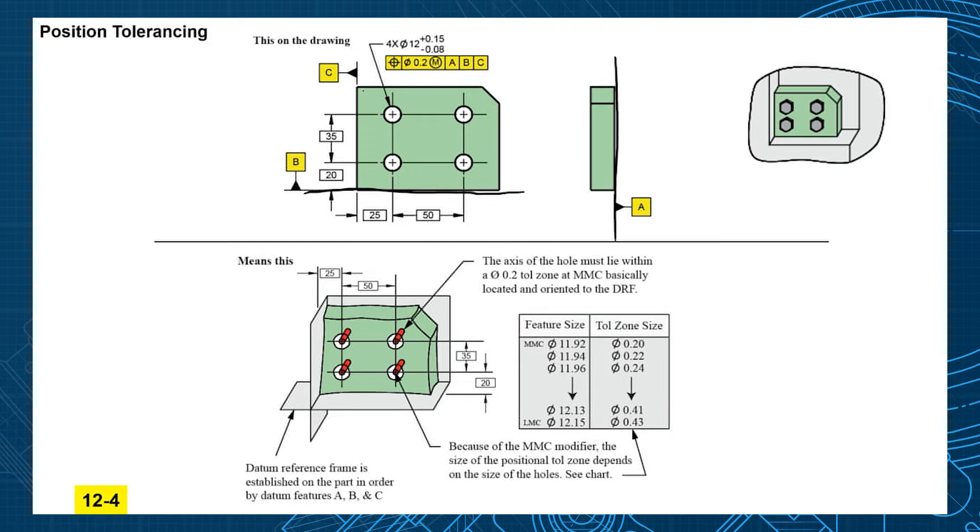And we use basic dimensions to tell you the true position of where the holes are supposed to be. There's no tolerance on those dimensions, they're theoretically exact.